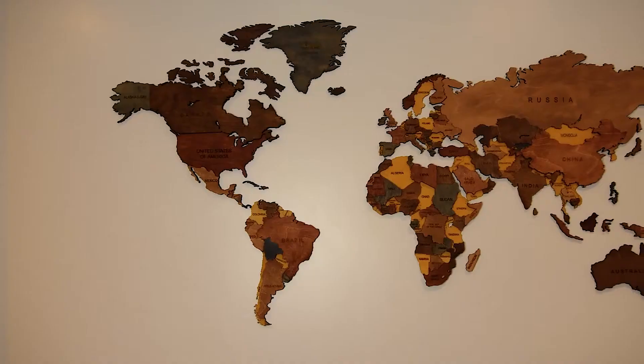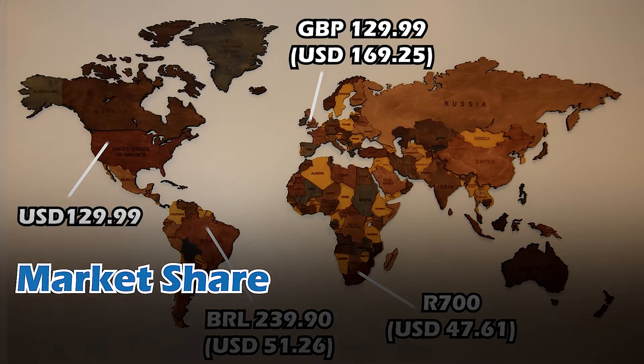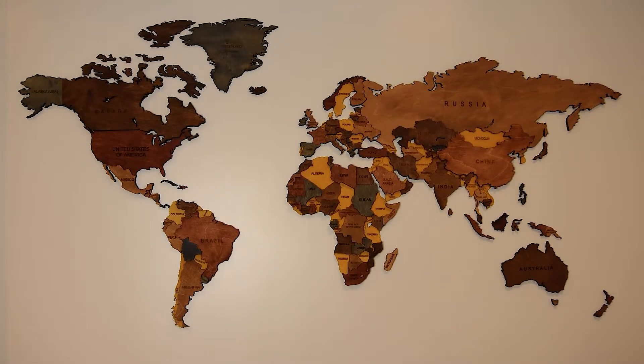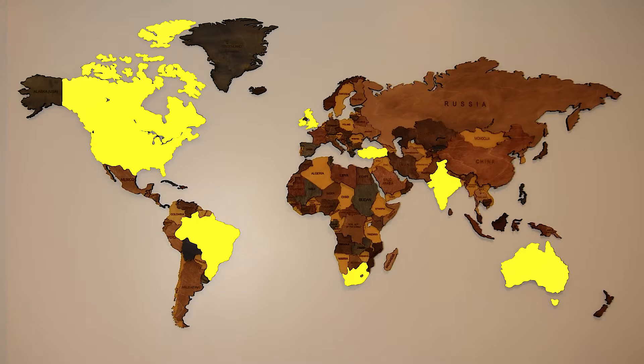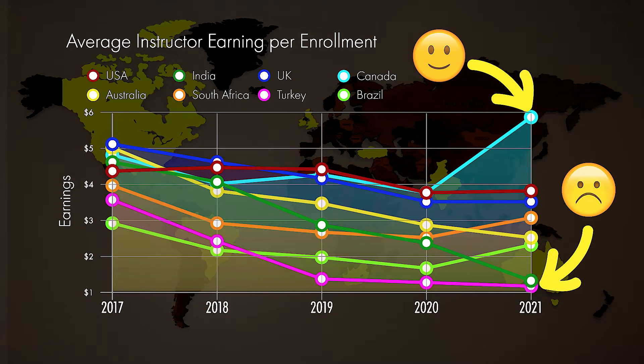I felt that something really was changing with some of these really low earnings coming through. I know that courses sell at different price points around the world, so I had a look at market share by country and associated averages over time to try and explain the decline from 2017 to 2020. Using a Pareto approach, I looked at the stats for eight countries that contributed 80% of the earnings, and you can see the trend between 2017 and 2021 in terms of the average instructor share by country over time.